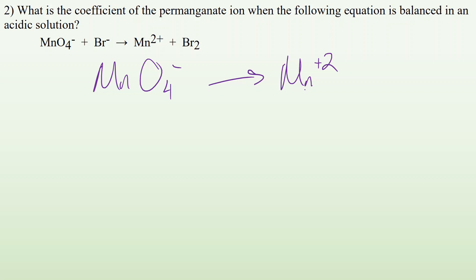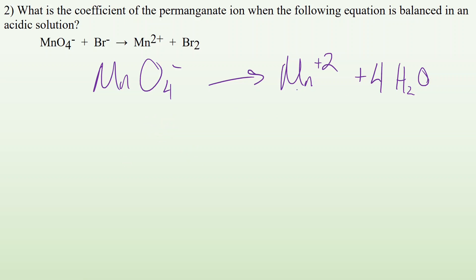Next, balance the oxygens by adding water. I have four oxygens on the left and none on the right, so I'm going to add four H₂O molecules. Now I have four oxygens on both sides. Then balance the hydrogens by adding H⁺. On the right side I now have eight H's, so I have to add eight H⁺ on the left to balance that.